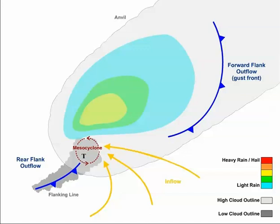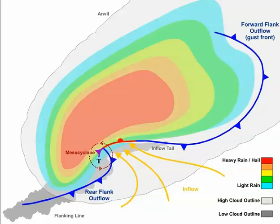On the other hand, if the upper level winds are just right, sometimes the rear flank downdraft is really prominent and contains lots of precipitation. In such cases, there's not an obvious hook echo, and the supercell's radar reflectivity ends up looking more like a kidney bean. Despite the lack of a hook echo, these supercells can still produce a tornado near the T. Although, from the ground, these tornadoes can be hard to see because they're often masked by precipitation wrapping around them.